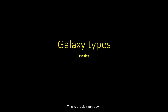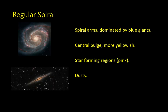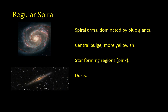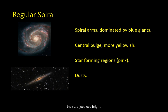This is a quick rundown on how to identify different types of galaxies. Spiral galaxies, as the name suggests, have spiral arms, which have a distinct blue hue due to the blue giant stars dominating them. Keep in mind, there are other types of stars in these arms, they are just less bright.